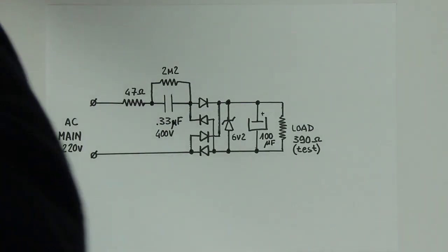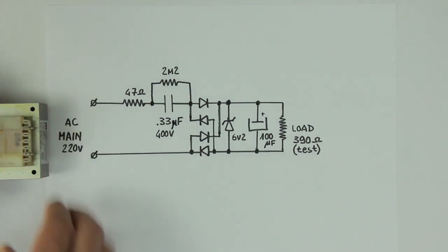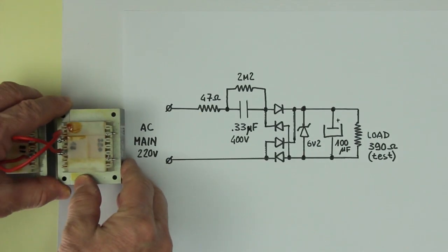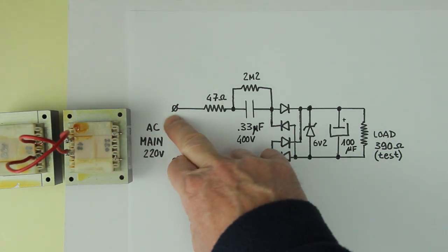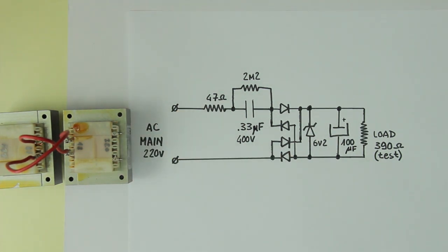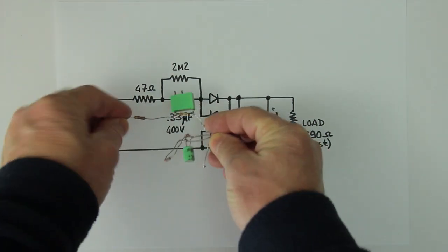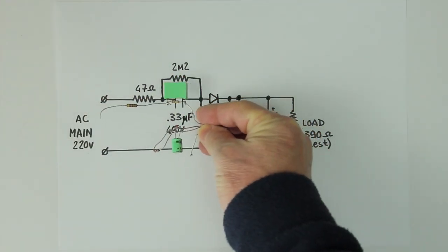This is the schematic of our capacitive power supply under test. Again, the couple of transformers are not part of the actual circuit under test and are rigged up to provide isolation and limit the current in case something goes wrong.